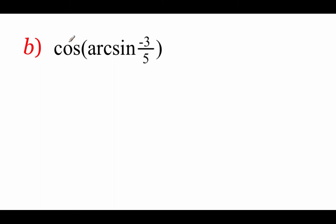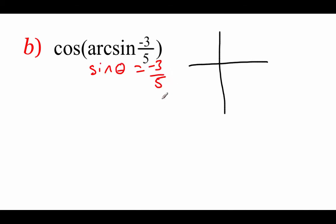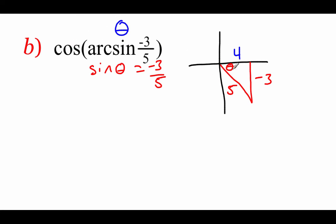Taking a look at example B, we've got the cosine of an arcsine of negative 3/5. I'm focusing on that inner arcsine to help me draw my picture for theta — rewriting this, the sine of theta equals negative 3/5. We're looking at the right half since we're doing an arcsine, and this is a negative value, so the triangle has to be down in the fourth quadrant. Sine is opposite over hypotenuse. A little bit of Pythagorean theorem tells us the other side is 4. Now we evaluate the cosine of theta — cosine is adjacent over hypotenuse — so we get 4/5.